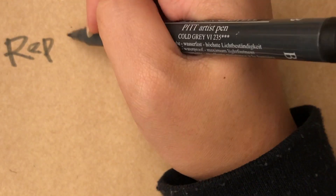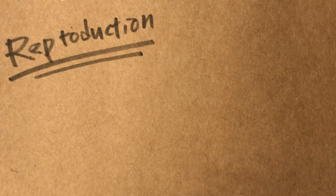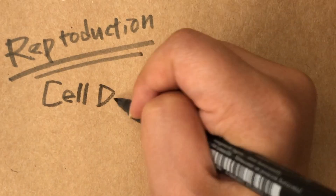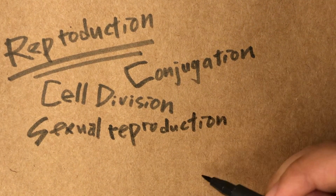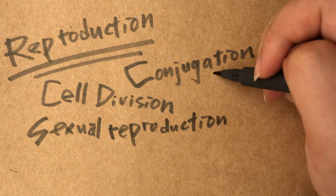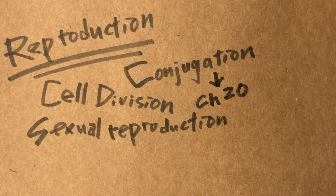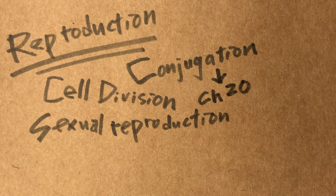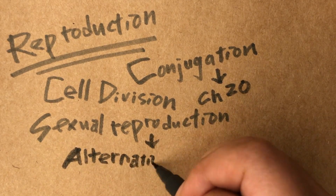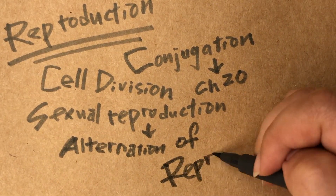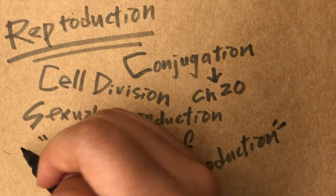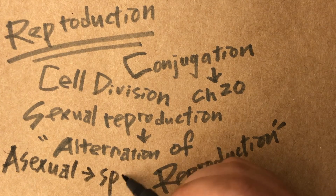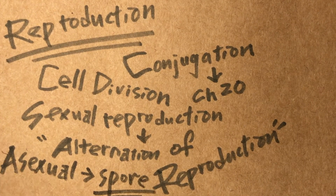Now, reproduction. Just like a lot of living things, protists can reproduce both sexually and asexually — cell division, conjugation, sexual reproduction, and all that. If you forgot what conjugation is, go check out my last video about prokaryotes and viruses. Alternation of generation is another term the book uses to describe the process of sexual reproduction. A lot of protists reproduce asexually by producing spores in a structure called a sporangium.